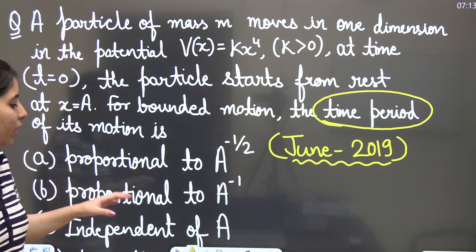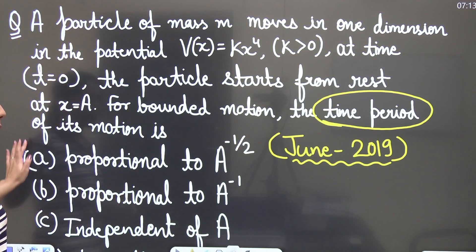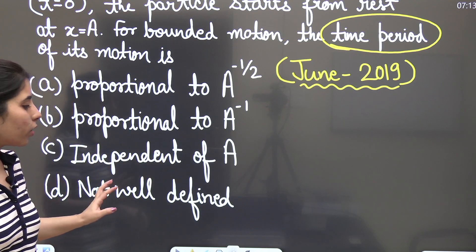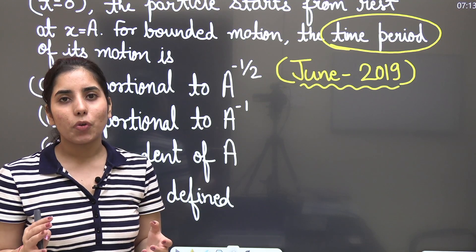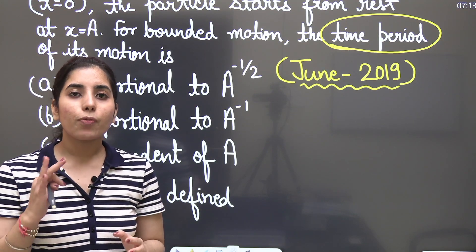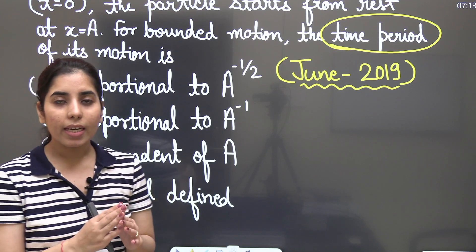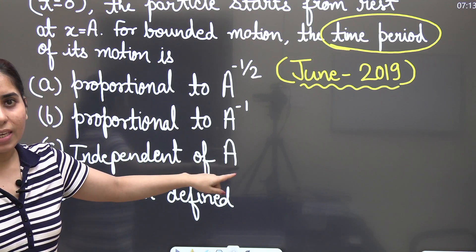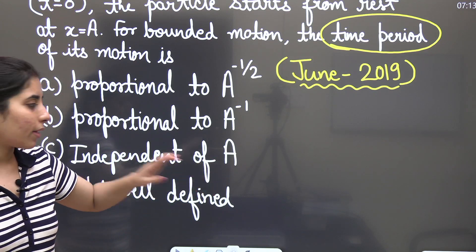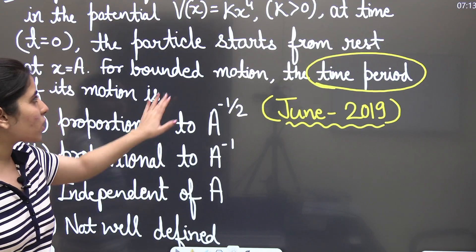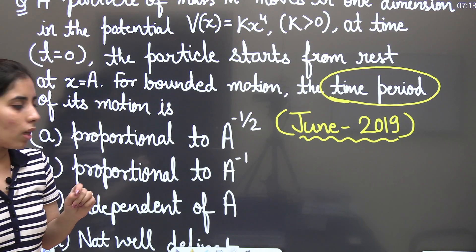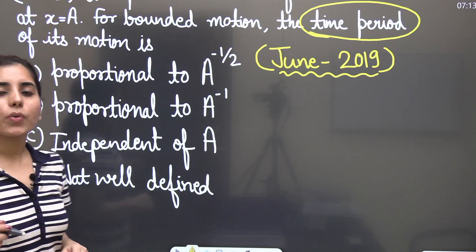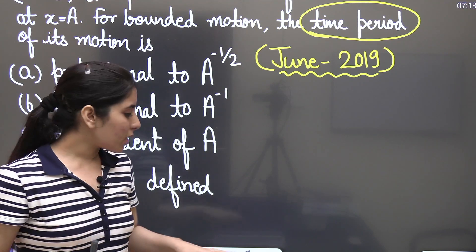We need to find how the time period T depends on a. Will it be proportional to a^(-1/2), proportional to a^(-1), independent of a, or not well defined? To determine the dependency of T on a, we will first try to get the dependency of the time period on energy.